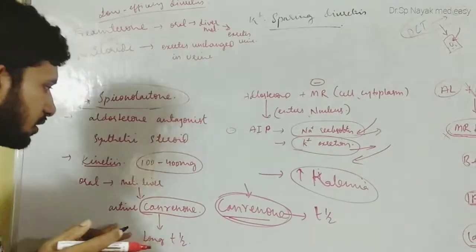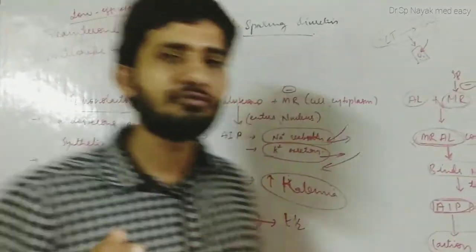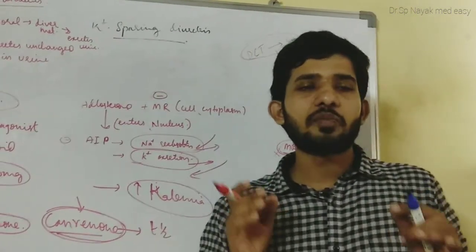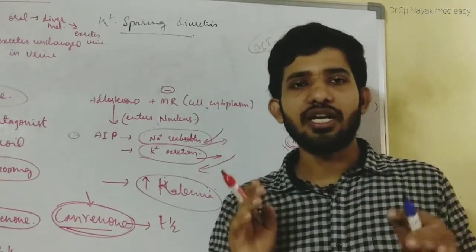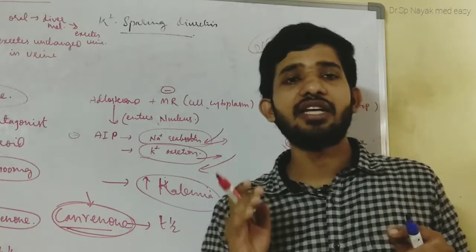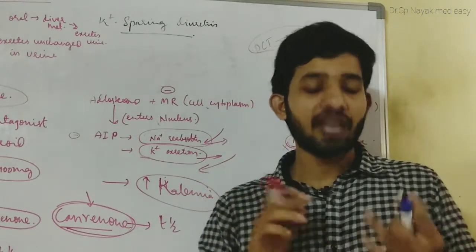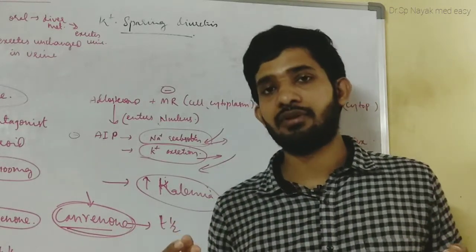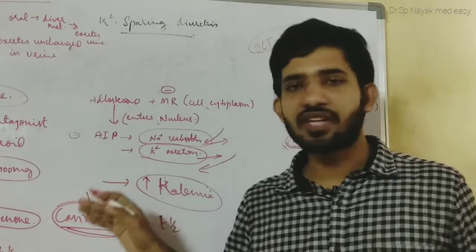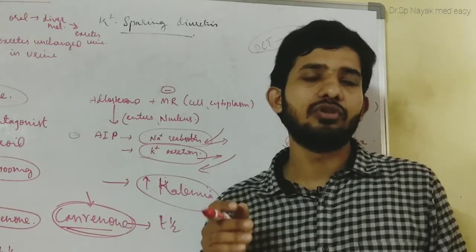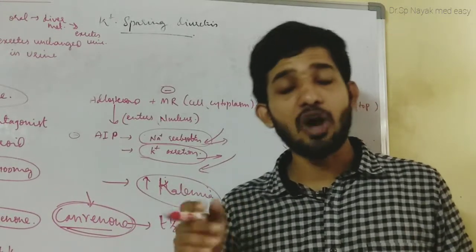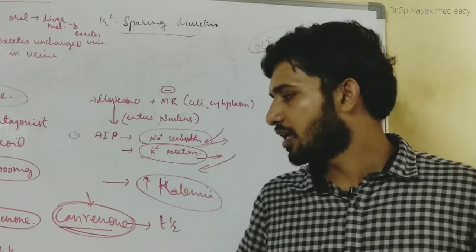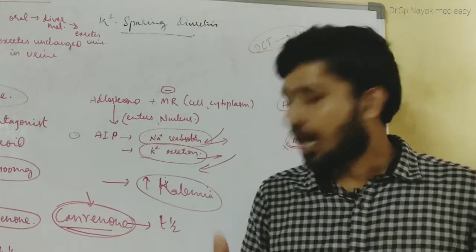One very important point: potassium-sparing diuretics are indicated in thiazide diuretic-induced hypokalemia. Thiazide diuretics and loop diuretics cause hypokalemia, so in those conditions we can prescribe spironolactone in combination to reduce the adverse drug reactions.